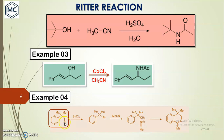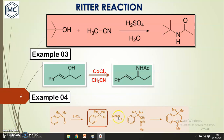Next example: here it is not an alcohol but instead of OH there is a Cl group. This Cl can leave by reacting with tin tetrachloride, then a carbocation is formed. This carbocation reacts with acetonitrile, and the nitrogen nucleophile attacks the carbocation to form the intermediate compound.